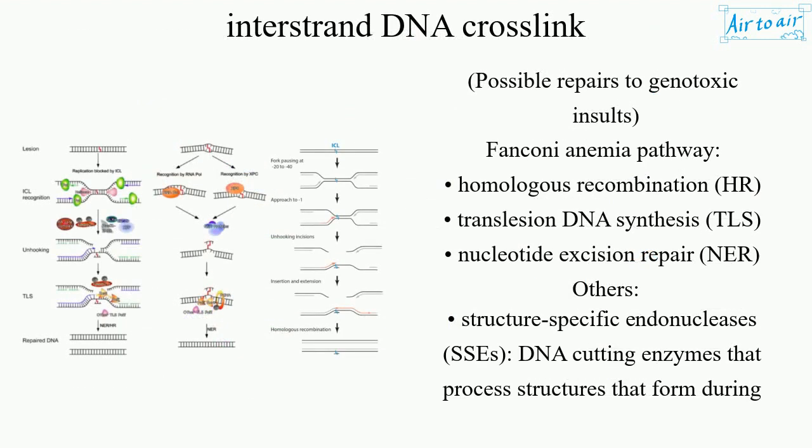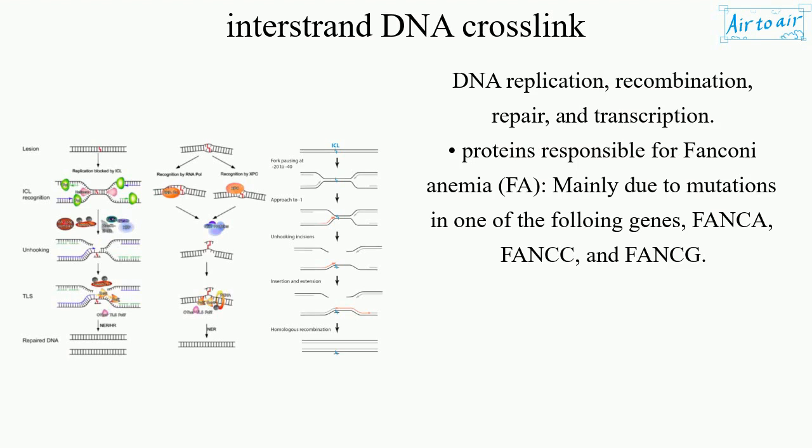Possible repairs to genotoxic insults include the Fanconi anemia pathway, homologous recombination, translesion DNA synthesis (TLS), nucleotide excision repair (NER), and others such as structure-specific endonucleases (SSEs) — DNA-cutting enzymes that process structures forming during DNA replication, recombination, repair, and transcription.